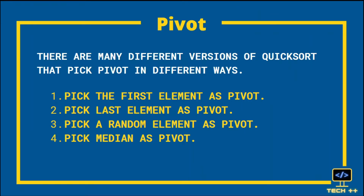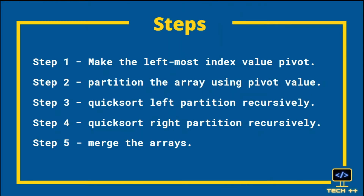In which ways can a pivot be picked from the array? First, pick the first element as a pivot. Second, pick the last element as a pivot. Third, pick a random element as a pivot. Or you can pick a median as a pivot. The key process in Quicksort is pivot and partition.